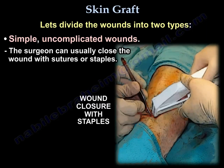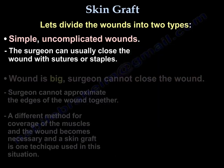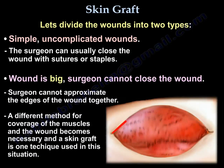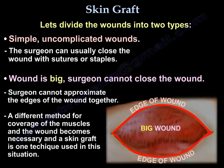The surgeon can usually close the wound with sutures or staples. However, when the wound is big and the surgeon cannot approximate the edges of the wound together — meaning the surgeon cannot close the wound — then a different method for coverage of the muscles and the wound becomes necessary. One of the techniques we use is a skin graft.